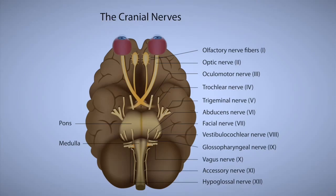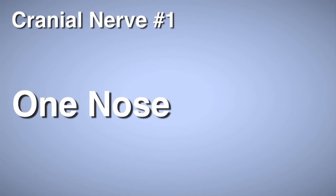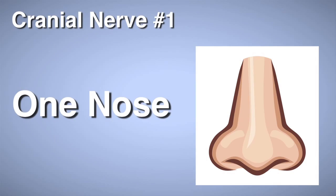This is the easiest way to know all 12 cranial nerves, so let's jump right in. Number 1 is one nose — cranial nerve number 1 is for your nose.